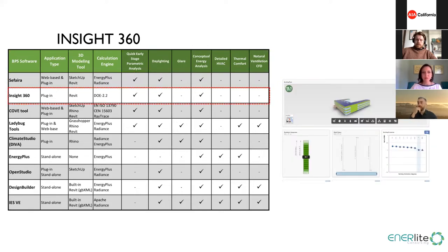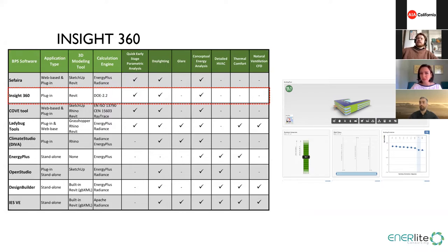Insight 360 is a free plugin for Revit users — a cloud-based tool. It uses DOE2 as its engine for both energy modeling and daylighting. The quality of daylighting performed by Insight 360 is not perfect because it uses DOE2, which is like the grandfather of Energy Plus. If you want more accurate daylighting in Revit, you should use LAR (Lighting Analysis for Revit). Insight 360 provides conceptual early-stage energy modeling but not detailed HVAC, thermal comfort, or CFD. It is good for providing design alternatives and checking parametric options at early stages.